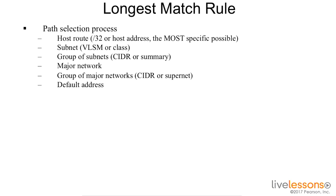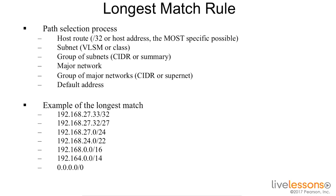So for instance, if we can match the exact host route, that would be the most specific match possible. We then work our way down the line — matching a subnet or a group of subnets, maybe the major network or a group of major networks. If nothing else is working, we send that packet to the default address.